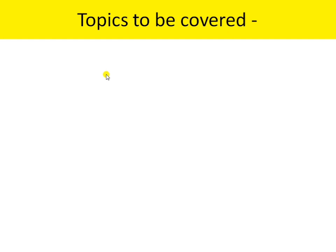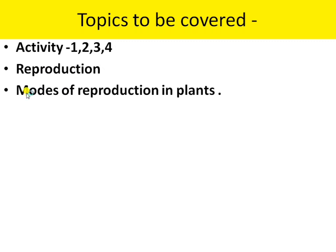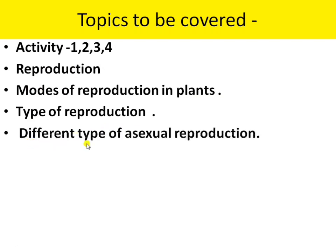I am going to cover the following topics in this chapter on Reproduction in Plants: Activity 1st, Activity 2nd, Activity 3rd, and Activity 4th. The second topic is about Reproduction. Third is the modes of reproduction in plants. Fourth is the type of reproduction. Fifth is the different types of asexual reproduction.